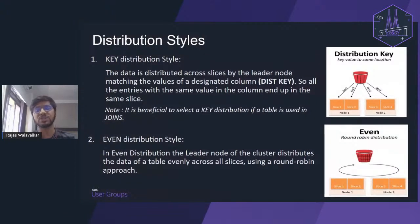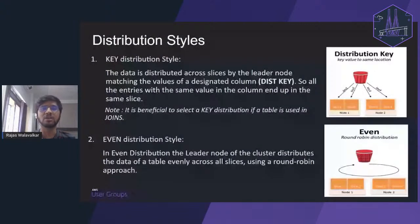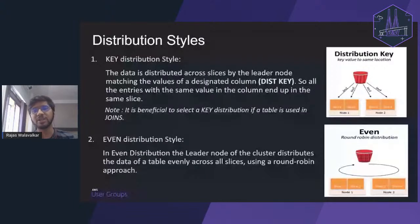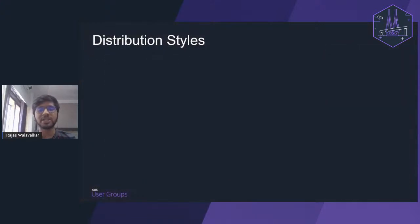A good example of even distribution style is data marts in a warehousing concept. Data marts are the final aggregated tables created for reporting or BI tool needs. All calculations, joining, and everything happens before creation of data marts — once you create a data mart table, you ideally do not join it with any other table. Those types of tables can be created using even distribution style.